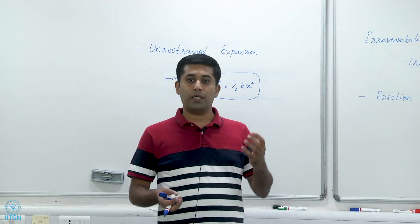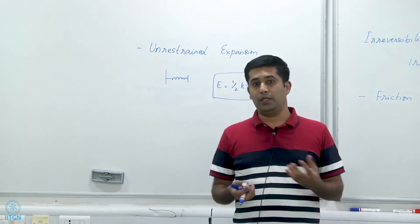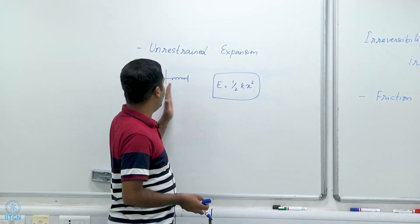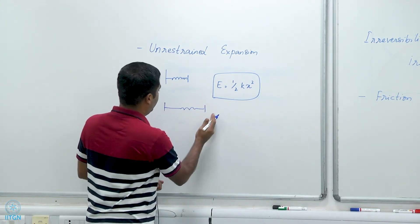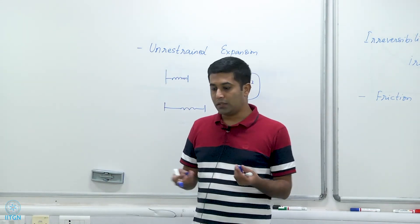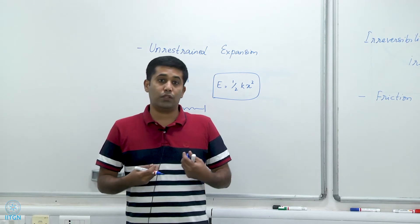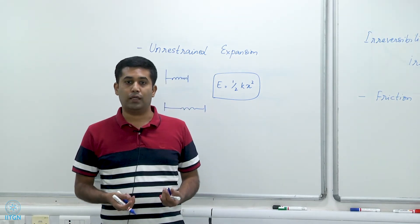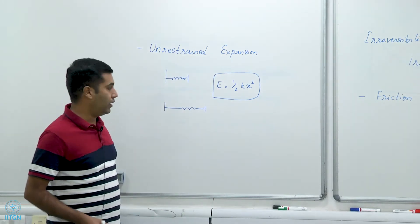To bring the spring back, I have to do work to compress it again, equivalent to ½kx². So I lost ½kx² and then have to do ½kx² again to bring the system back. Although the system can be restored to its initial condition, the surroundings cannot be — that work ½kx² is lost forever. Therefore, unrestrained expansion leads to irreversibility.